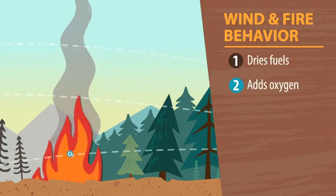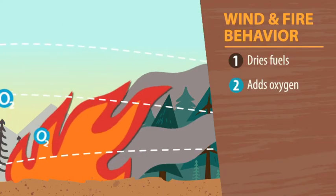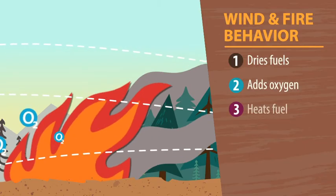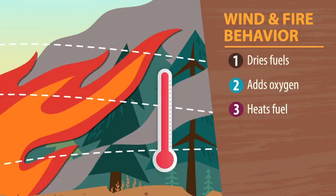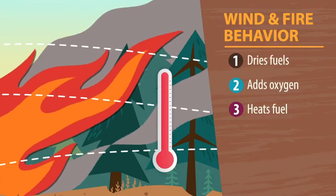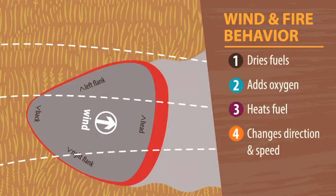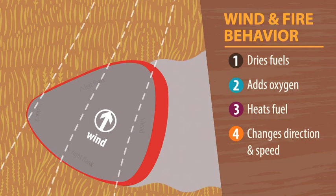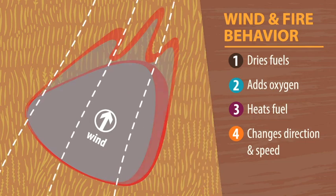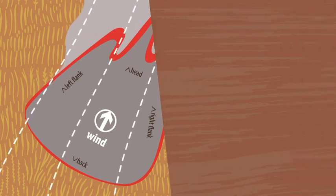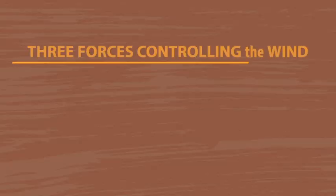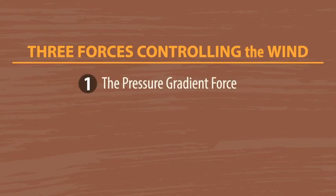Three: wind bends the flame over the fuels, which preheats and dries the fuels ahead of the flaming front. Four: wind influences the speed and the direction of fire spread and the transport of smoke. There are three main forces controlling the wind: one, the pressure gradient force; two, the Coriolis force; and three, the force of friction.